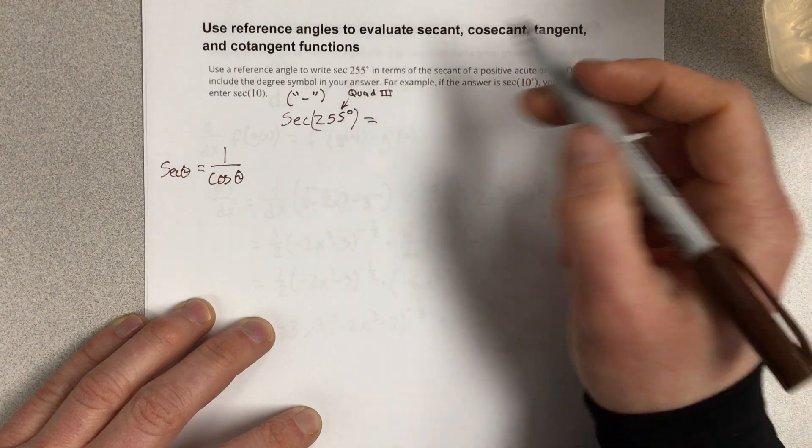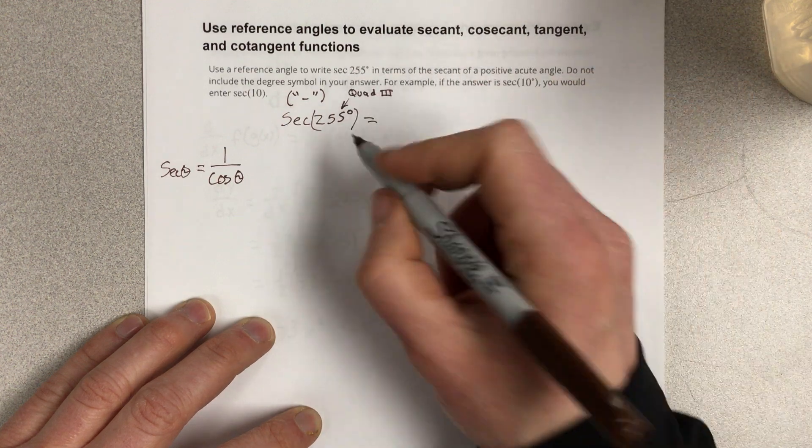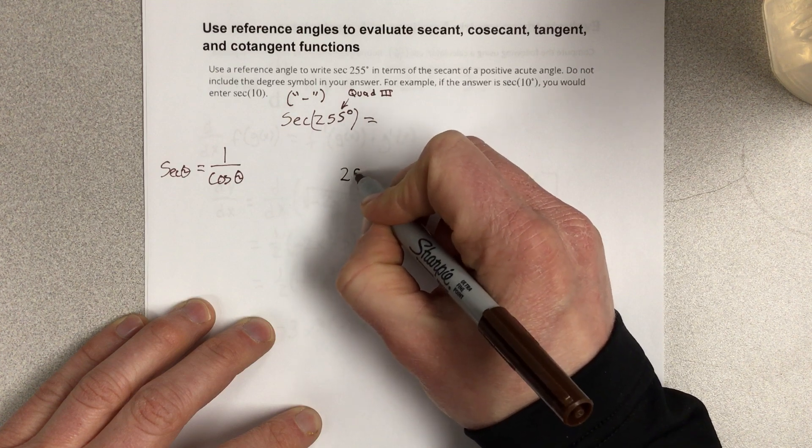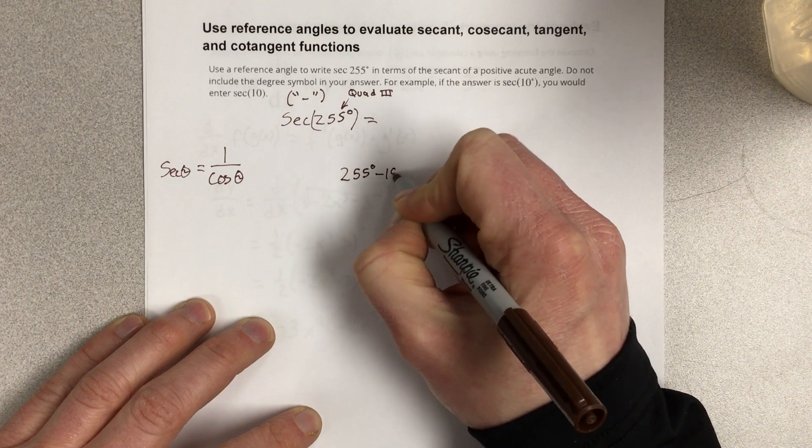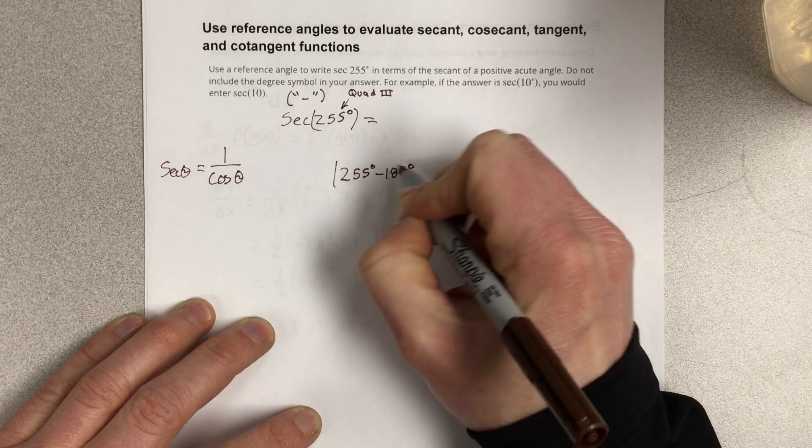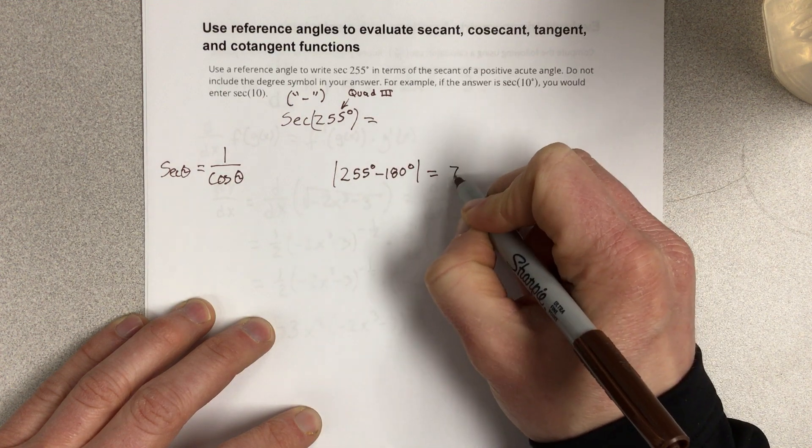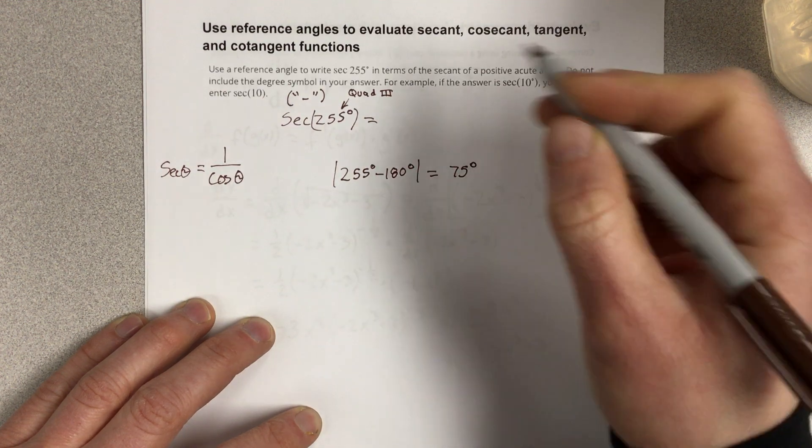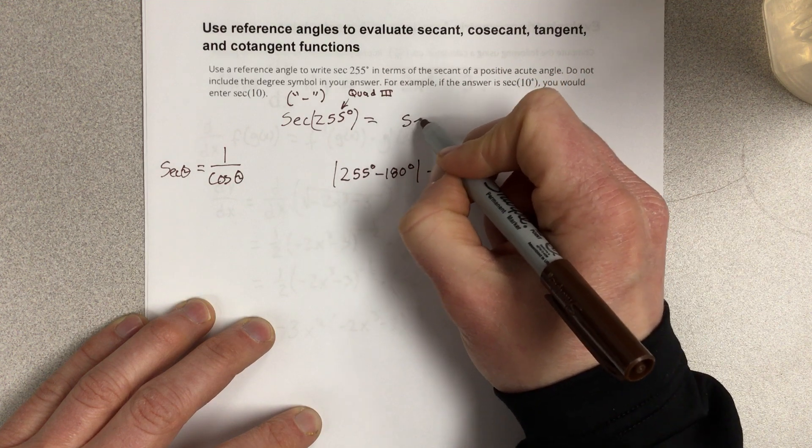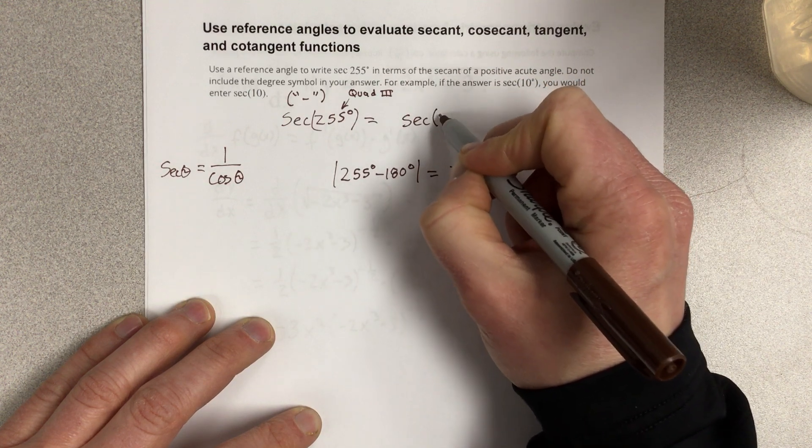Now, I need to find the reference angle for 255, so I'm going to take 255, subtract 180 degrees, take the absolute value of that, and that gives you 75 degrees. So, this is actually equal to secant of 75 degrees.